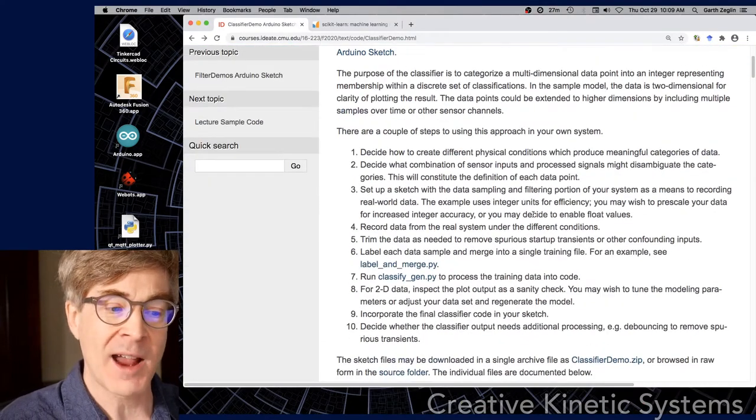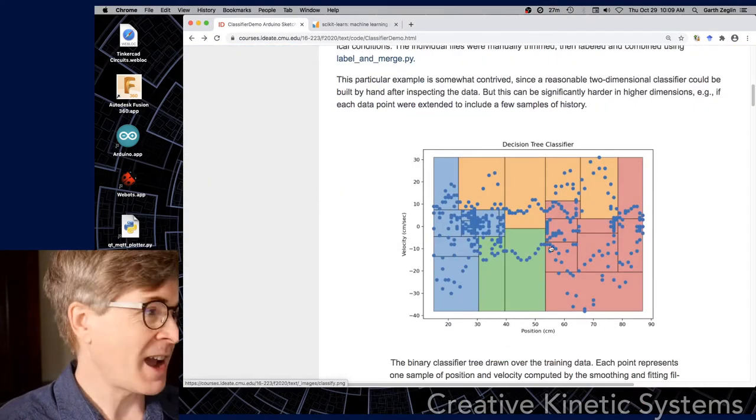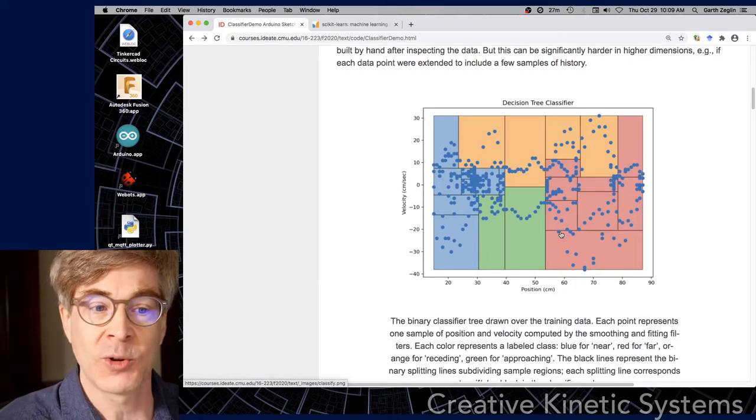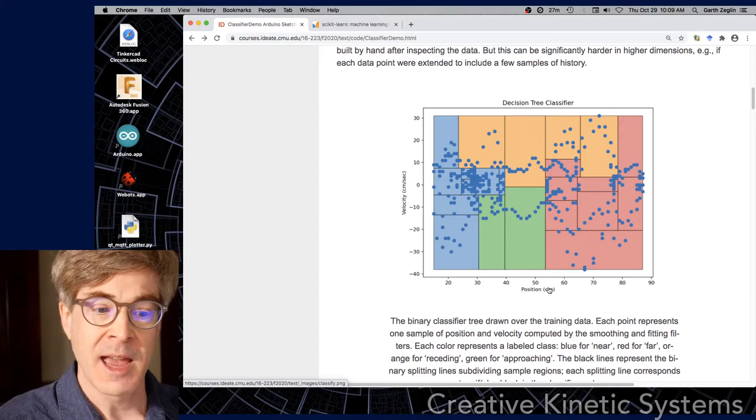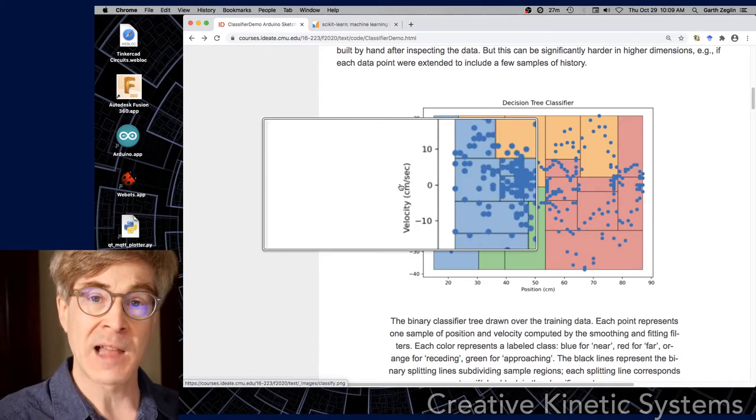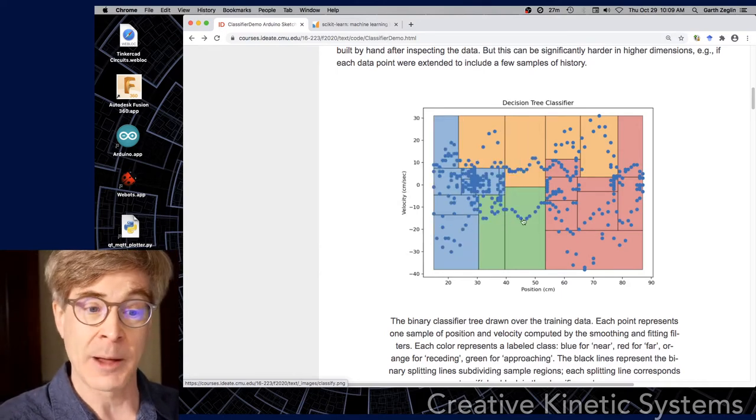Actually, we're going to look first at the higher order view of this. So if we take our points, that file I just showed you is a bunch of two-dimensional points that represent the position that's reported by the range sensor after filtering and the computed velocity of the object, presumably out there.